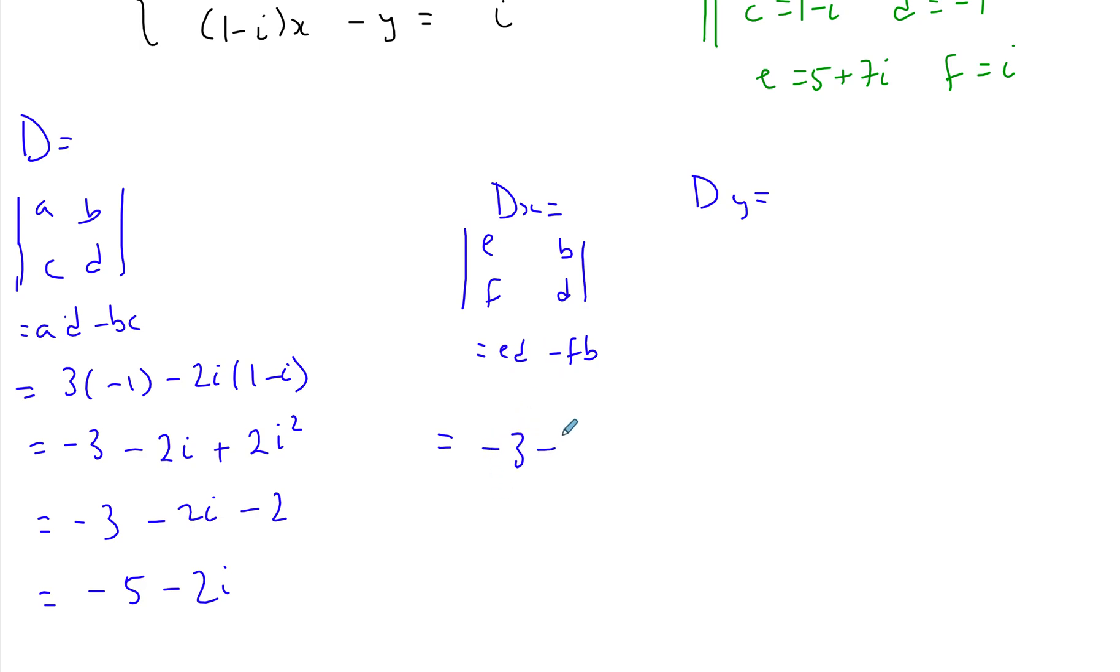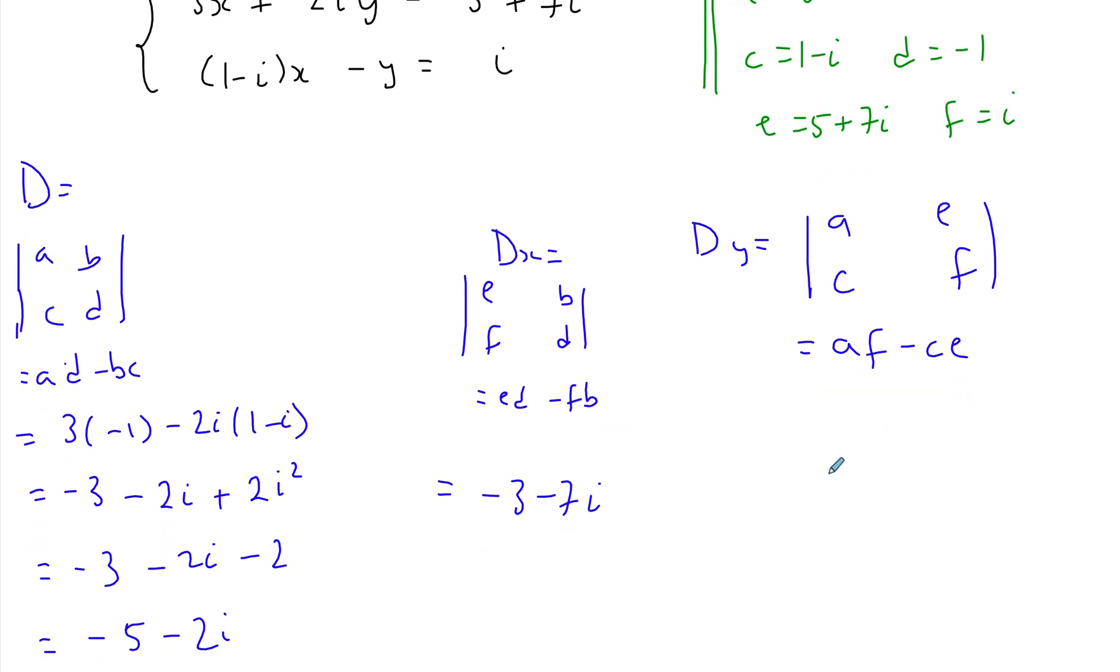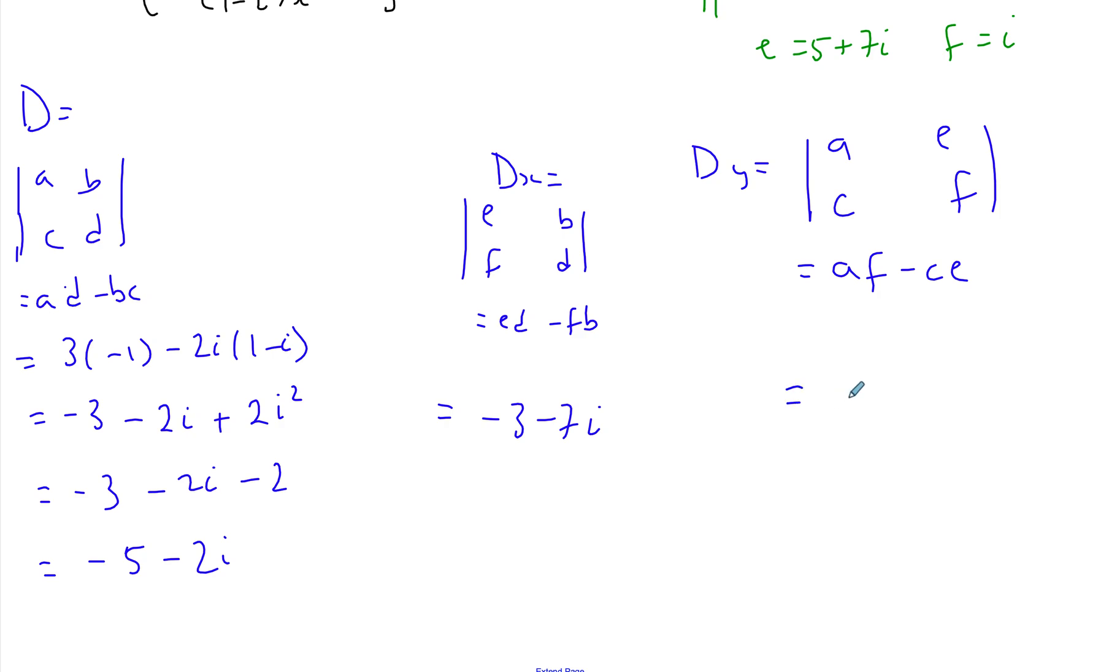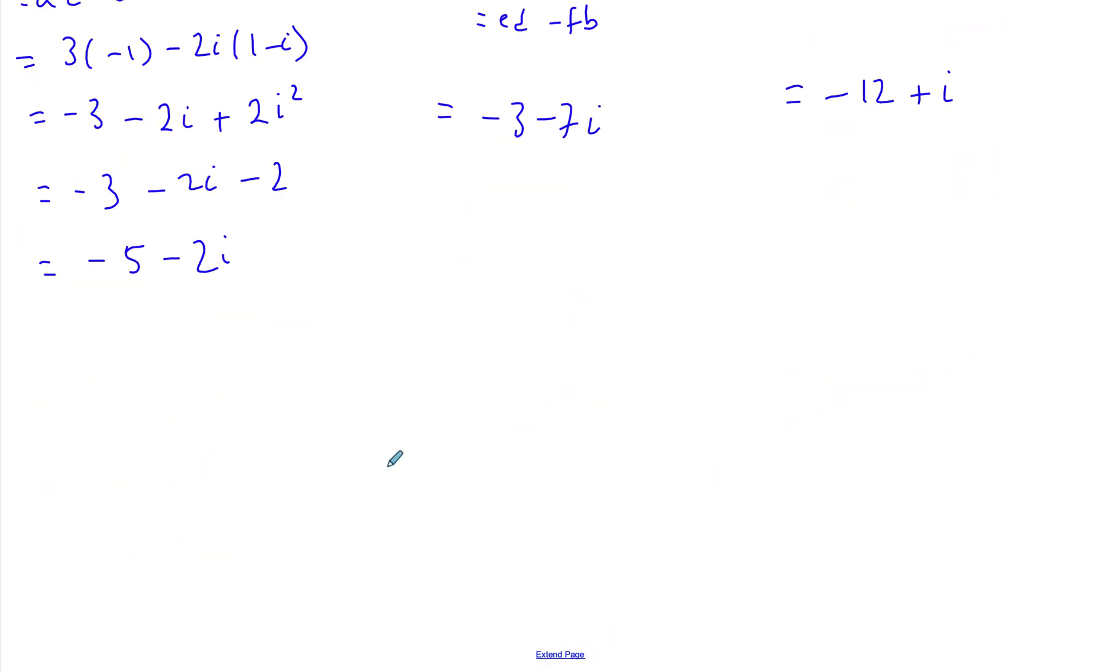And then for DY, you take the coefficients of x - a and c - and then the constants e and f. Again, discriminant, so AF - CE. You can solve this on your own, and you're going to get -12 + i.